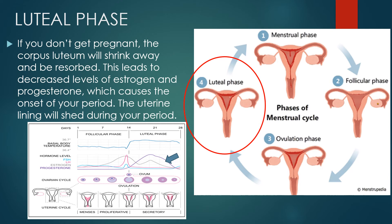Continuing the luteal phase: if you don't get pregnant, the corpus luteum will shrink and be resorbed — it will dissolve and disintegrate. This leads to falling levels of estrogen and progesterone, which causes the onset of your period. As you can see in the diagram, the uterine lining thickened in preparation for pregnancy, but since fertilization didn't occur, that lining will shed in the form of your period.